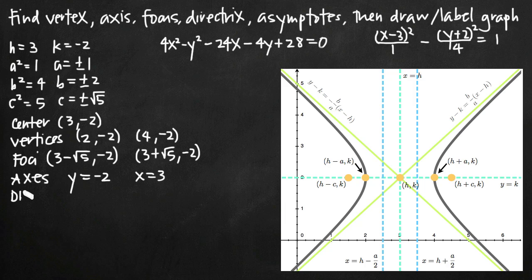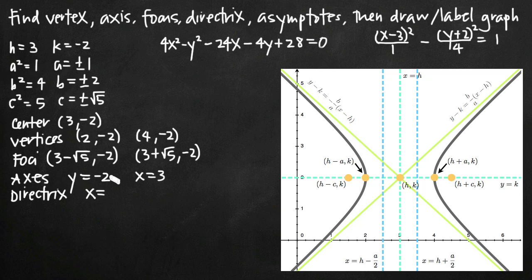For the directrices — the two lines that run halfway between the center and each vertex — the equations are x equals h minus a squared over 2 and x equals h plus a squared over 2. With h equals 3 and a equals 1, we get x equals 3 minus one-half and x equals 3 plus one-half, so the directrices are x equals 5/2 and x equals 7/2.